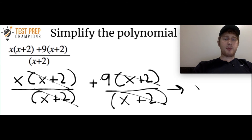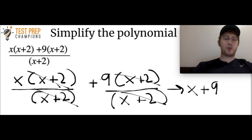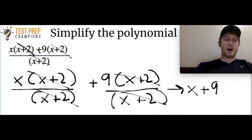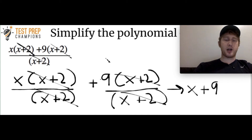I personally don't see any real advantage to the splitting approach — I think it just takes up extra time. It would be easier to just look at the question, cancel out all the x plus 2s, and say it's x plus 9. That took me about two seconds. But I wanted to show you splitting just in case you see it somewhere and aren't sure what it means.